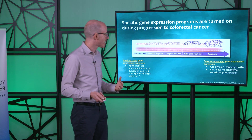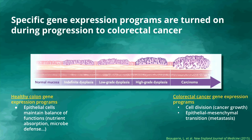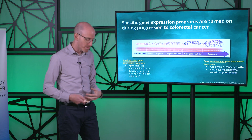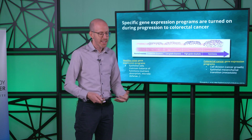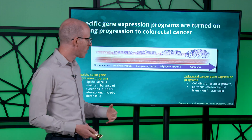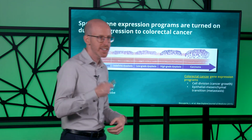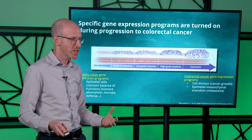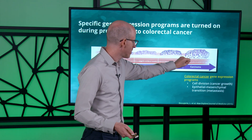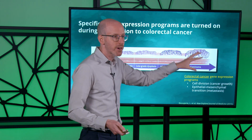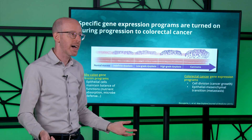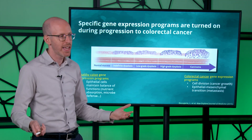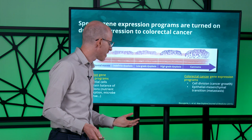The same holds true in cancer. As a healthy colon transitions to dysplasia and to cancer, you also get gene expression programs that are turned on. One defining feature of cancer is uncontrolled growth, so you see the program for cell division being activated. You also see a program called epithelial to mesenchymal transition, where epithelial cells detach from the tissue and migrate throughout the body to another site — that's called metastasis, which is very serious for the patient.